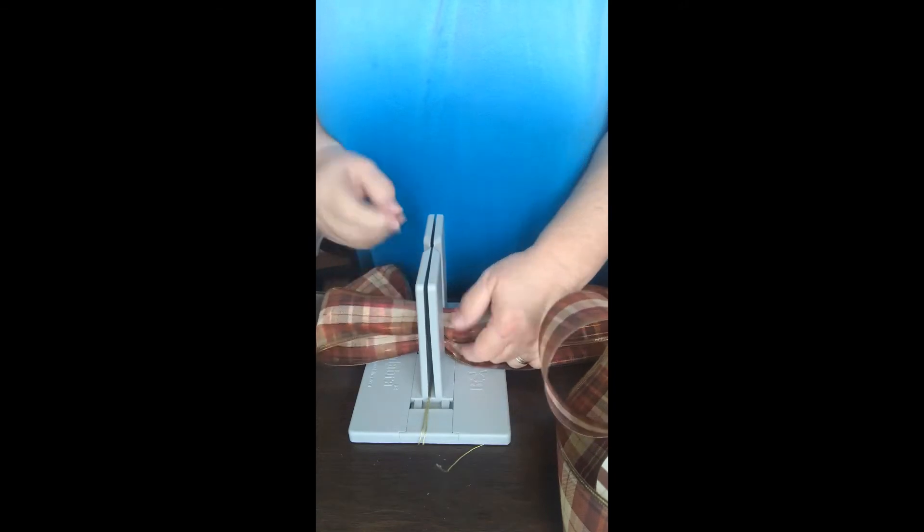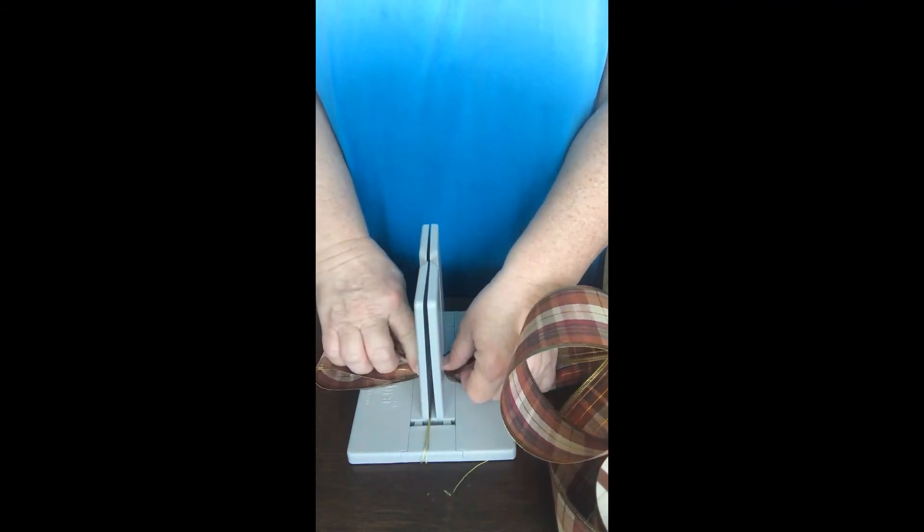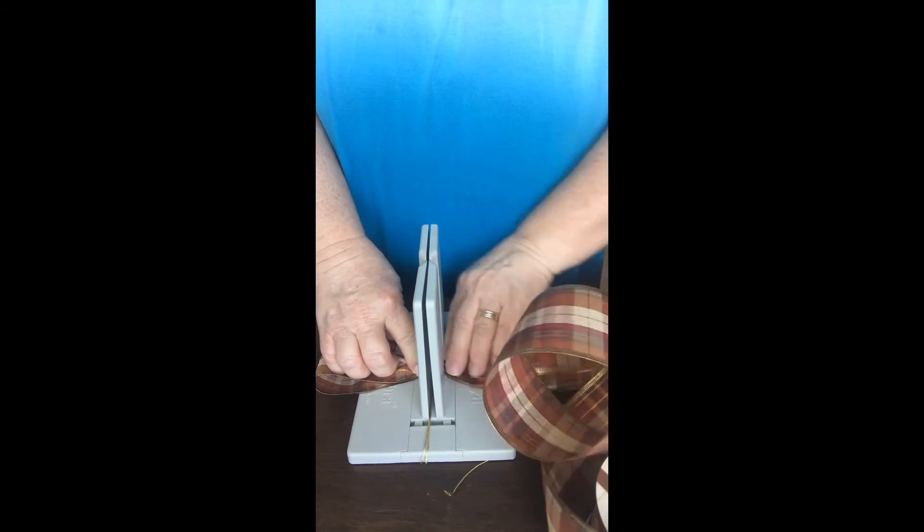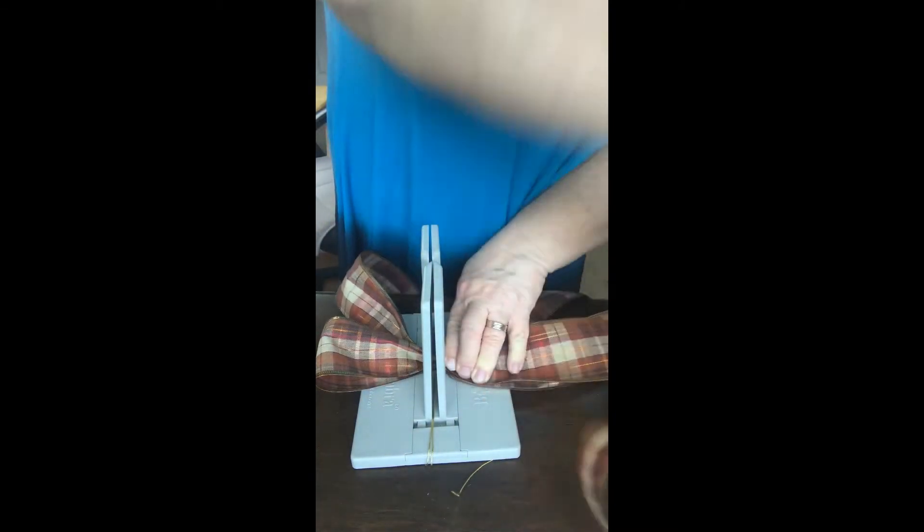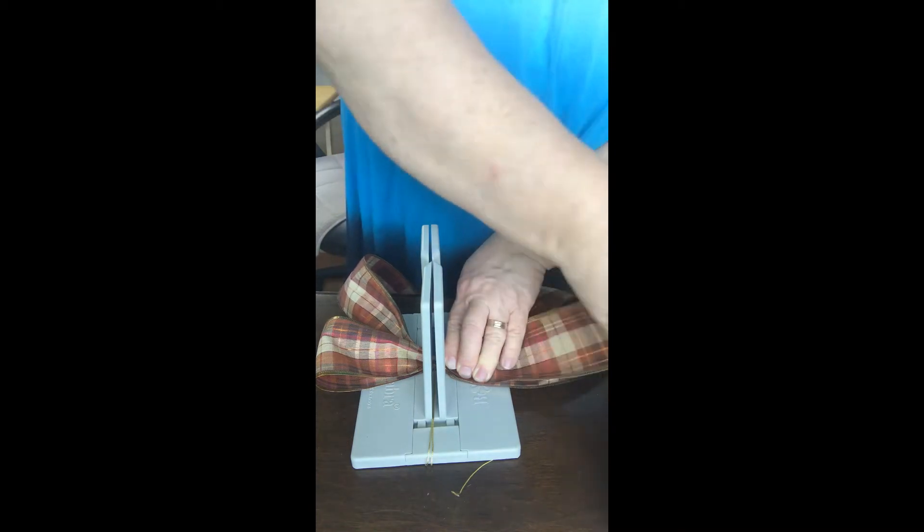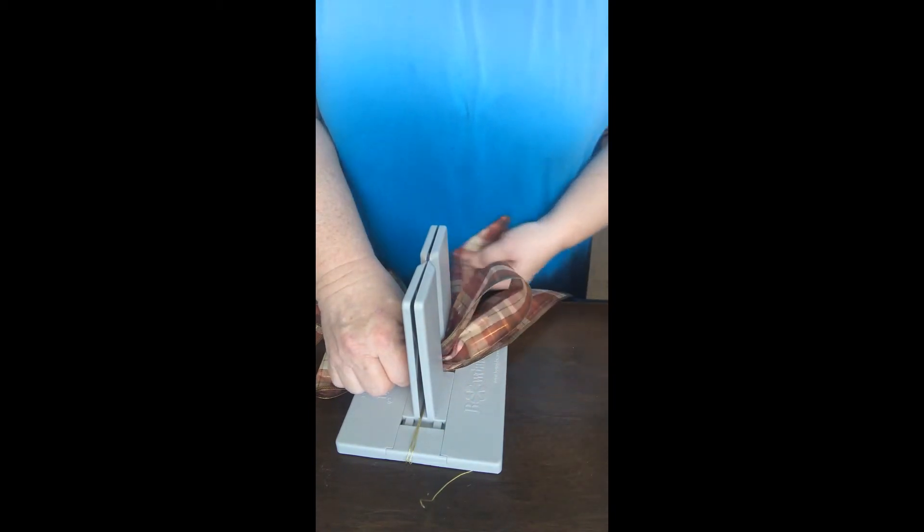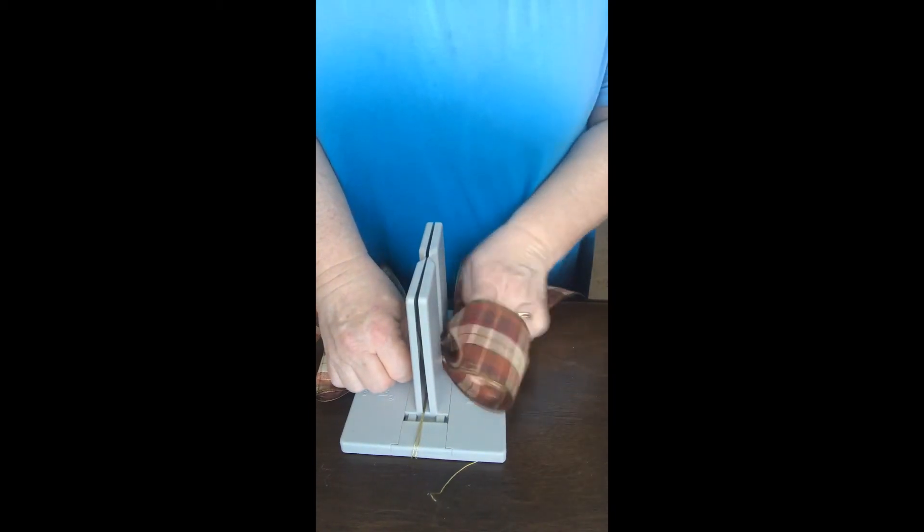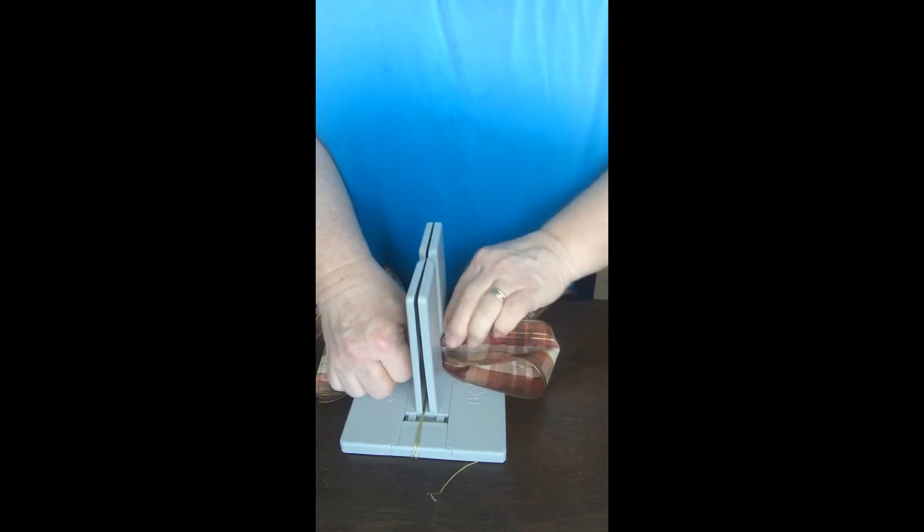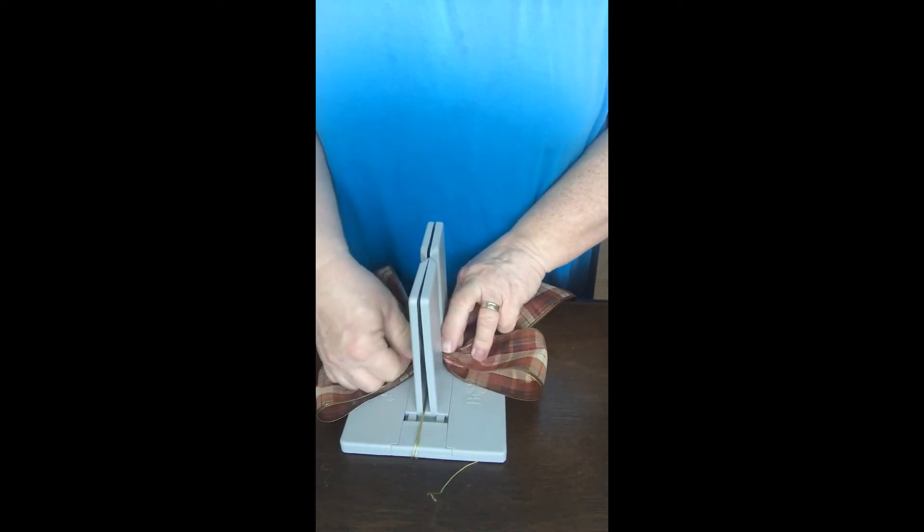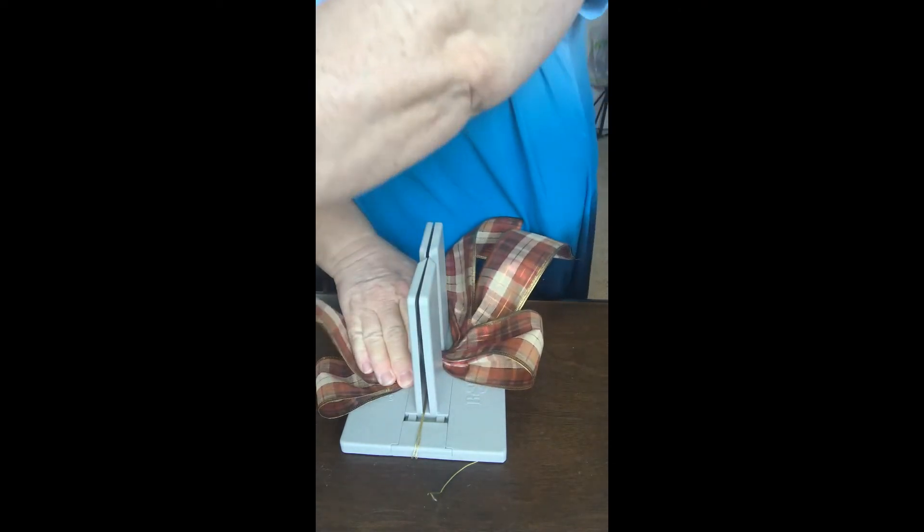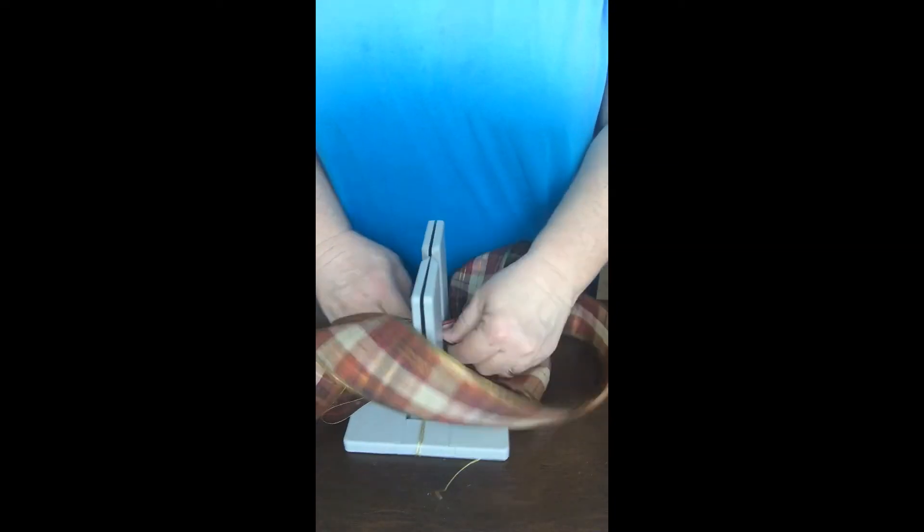You're just going to make your loop, pinch it in the middle. The Bowdabra basically gives you an extra set of hands. I didn't cut my ribbon off of the spool before I started, so I kind of have ribbon everywhere. So you're just going to make your loops. This is another tail.